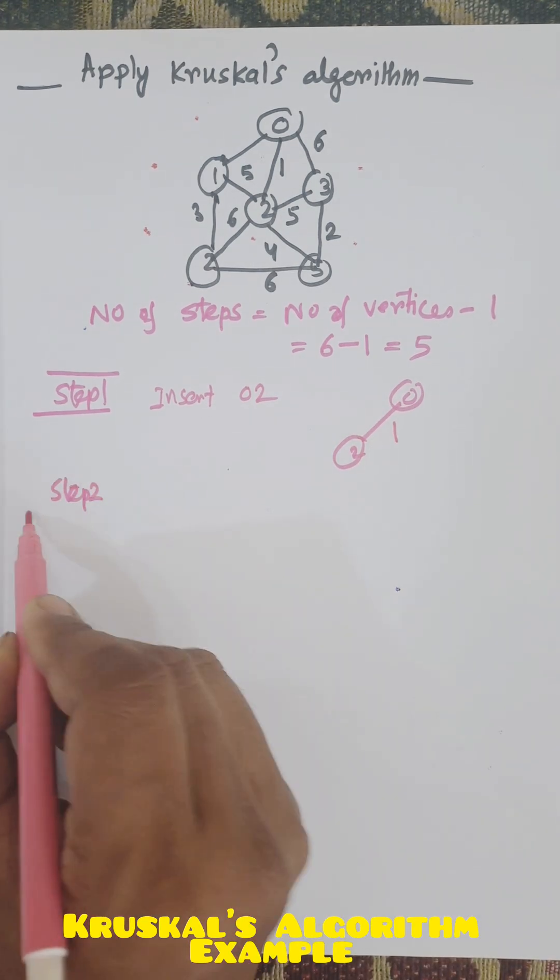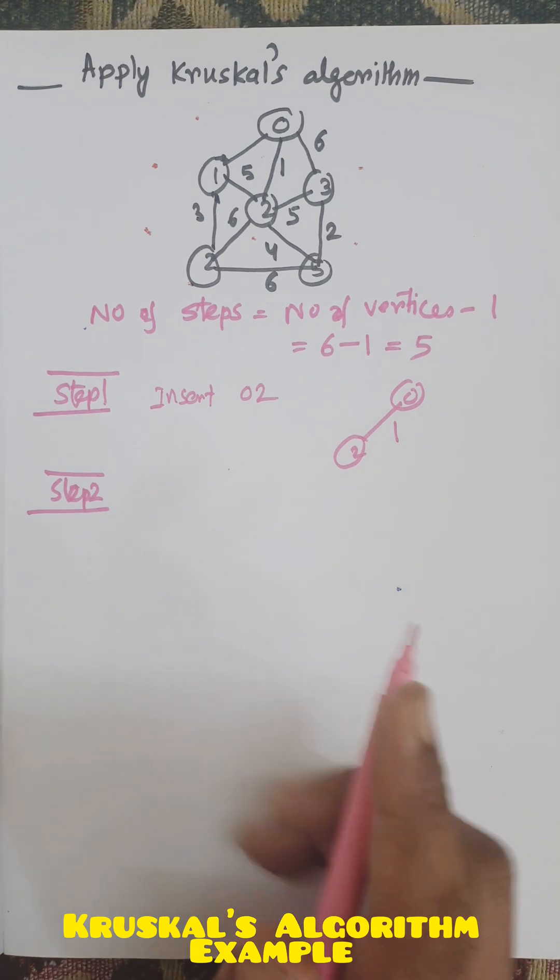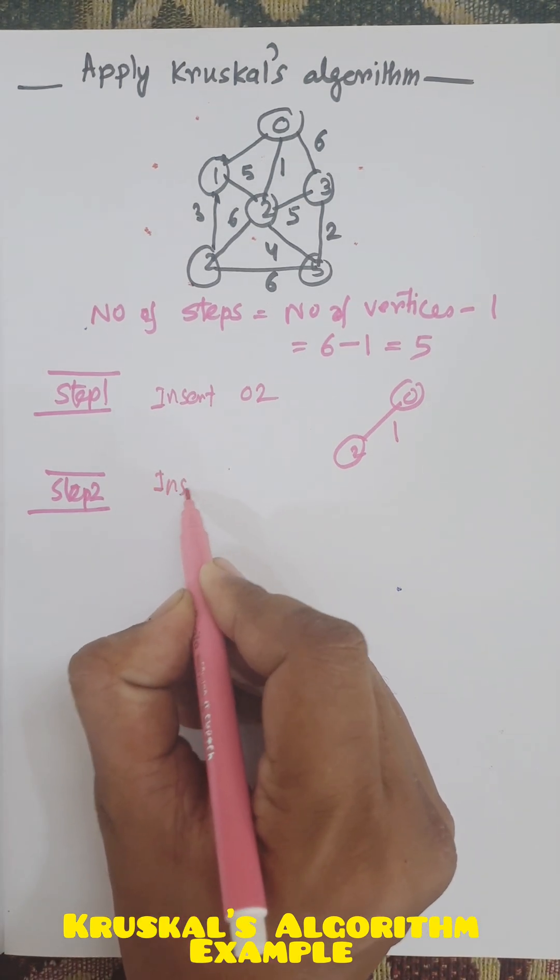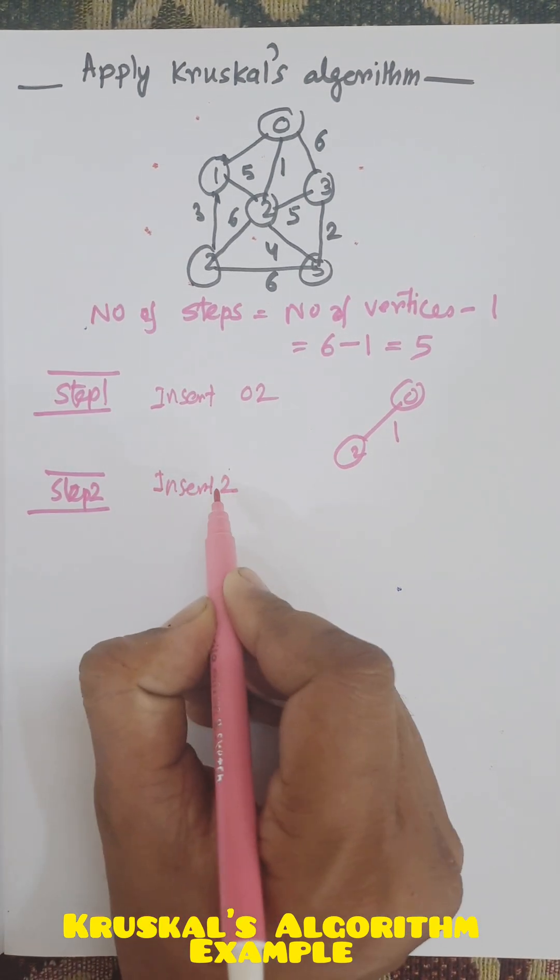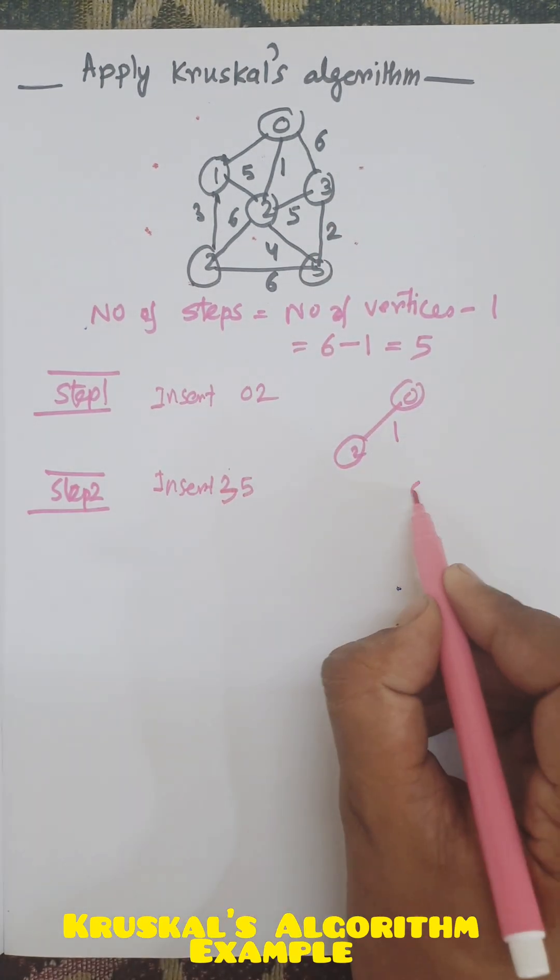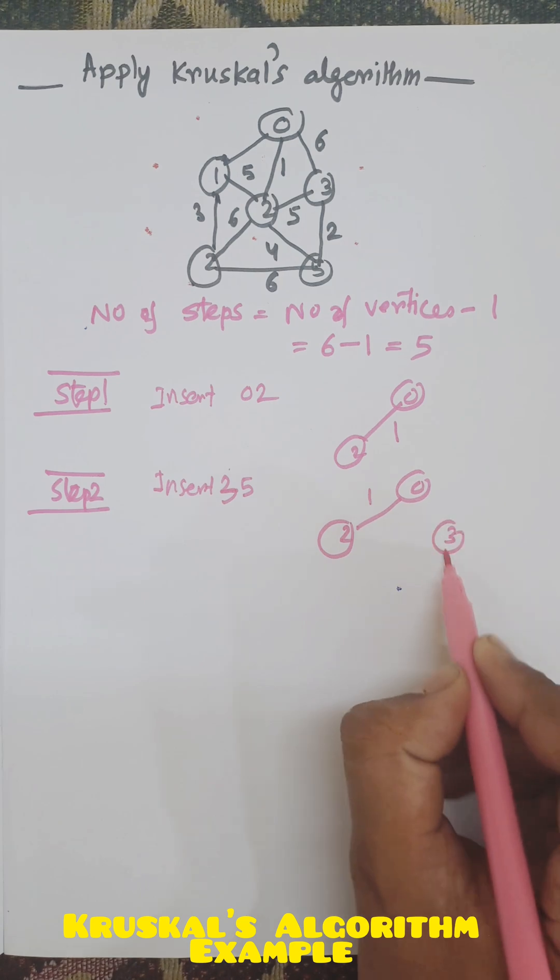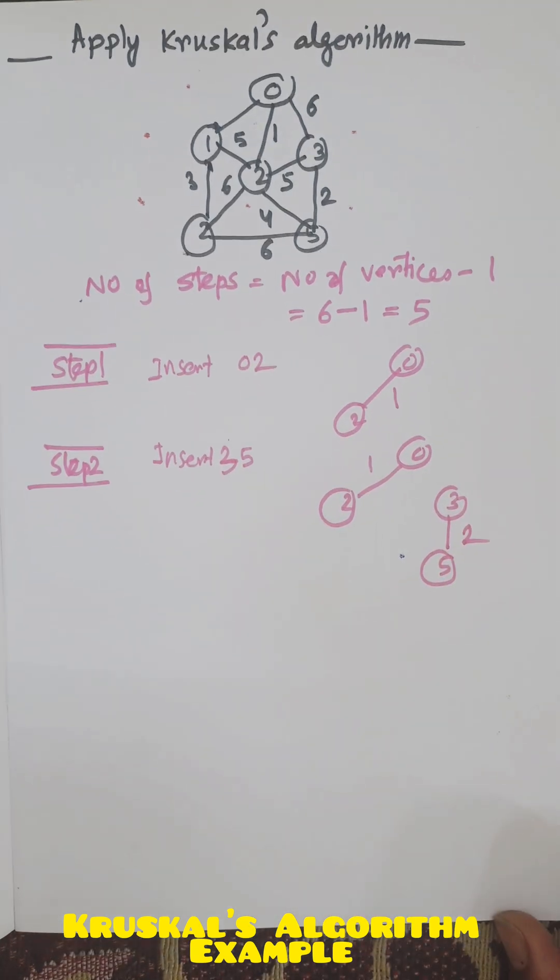Next, step 2. We need to find the next minimum cost, which is 2. Insert edge 3-5. So we have vertex 0, 1, 2 and vertex 3, 5. These are disconnected as we choose 3 and 5.